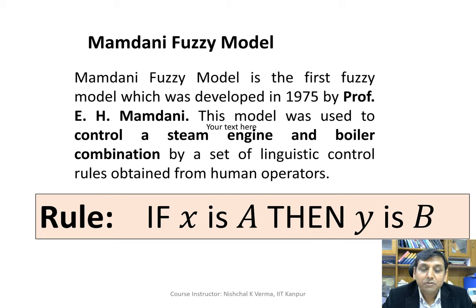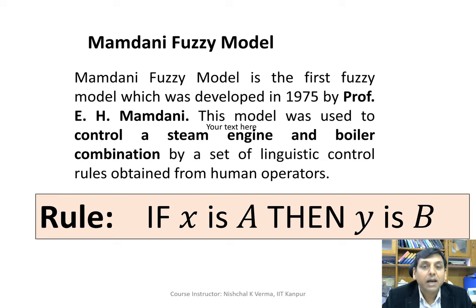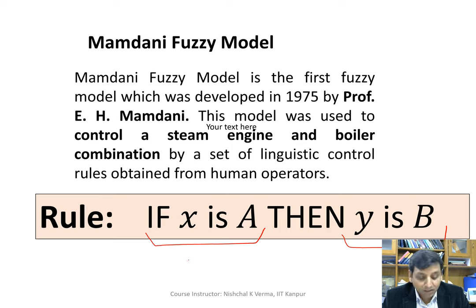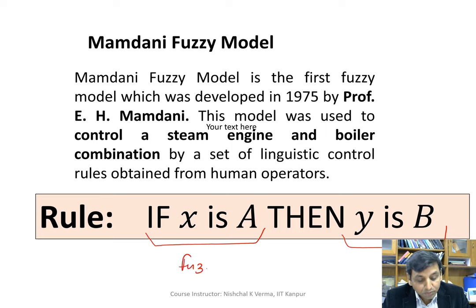The Mamdani model is a very interesting model in the sense that we use a set of fuzzy rules of a specific type. We use the Mamdani model when we have fuzzy if-then rules of this type, where the fuzzy if-then rules have a premise part and a consequent part. When both parts of the rule — the premise as well as the consequent — are fuzzy, then we use the Mamdani model.